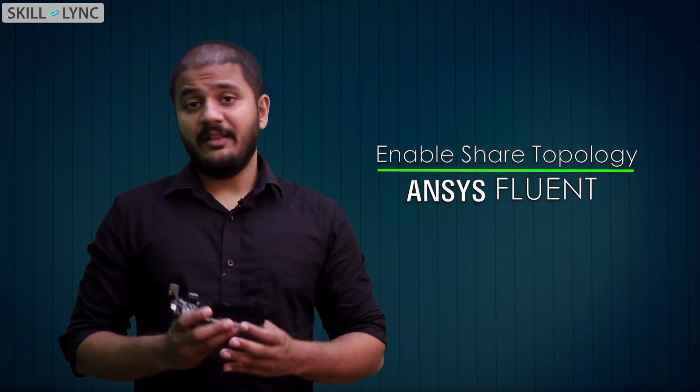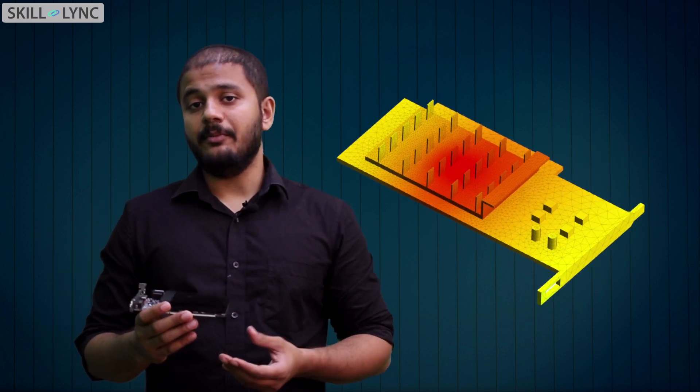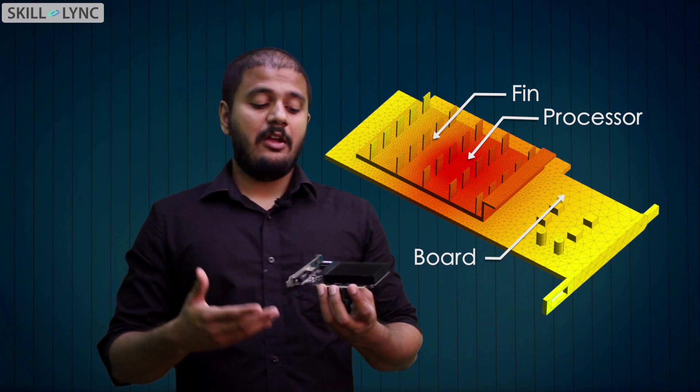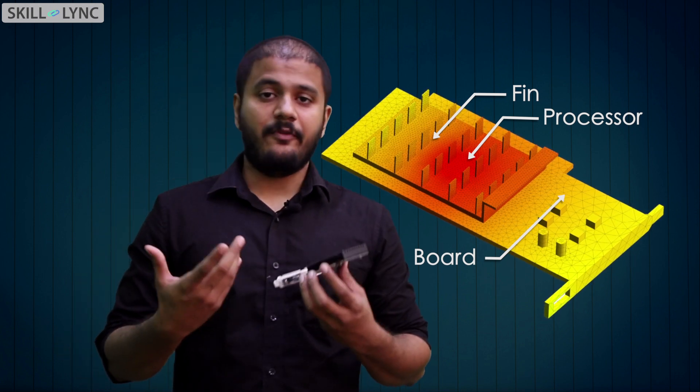The next step in this process is computational meshing. In this case, we have the fin, the processor, and the base circuit board. All of them are solids and they are made up of different materials.